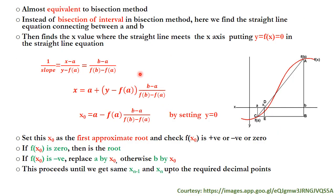Regula Falsi is almost equivalent to the bisection method. Instead of bisecting the interval as in the bisection method, here we find the straight line equation connecting the points (a, f(a)) and (b, f(b)), and then find the x value where that straight line meets the x-axis by setting y = f(x) = 0.